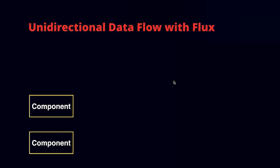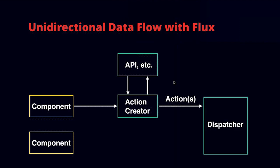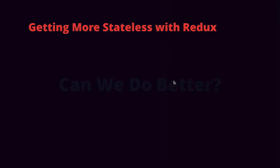It gets more complicated with asynchronous workflows — for instance, when a component's action requires a server interaction to save data. In this case, components trigger action creators instead. An action creator is a function that does work — like talking to an API — and dispatches multiple actions: one when the request is sent, another when the response comes back. The dispatcher then collects those actions, sends them to stores, and updates all components. Redux takes this Flux architecture to its logical conclusion.